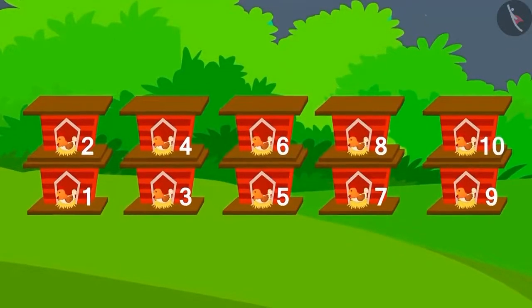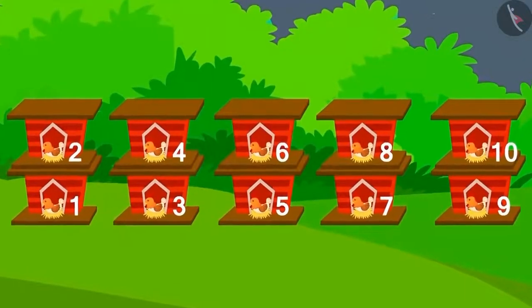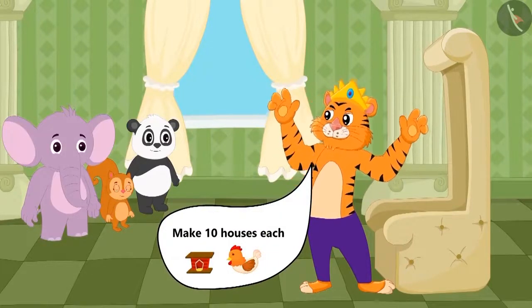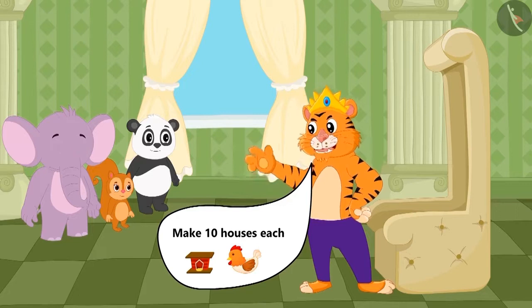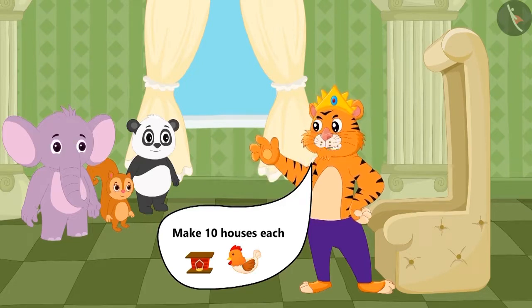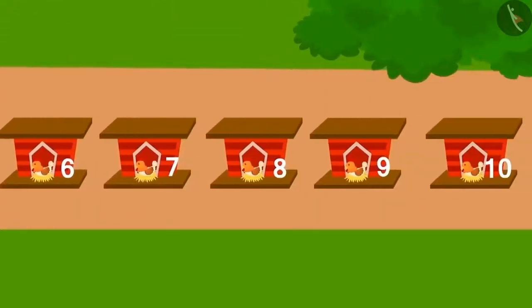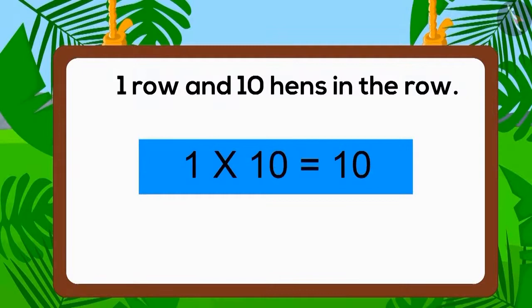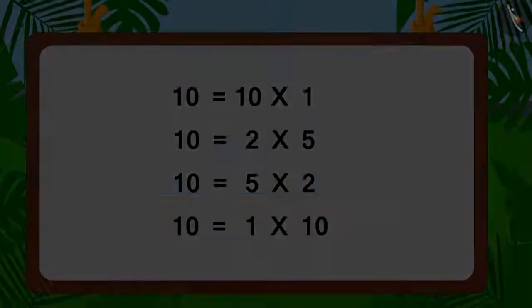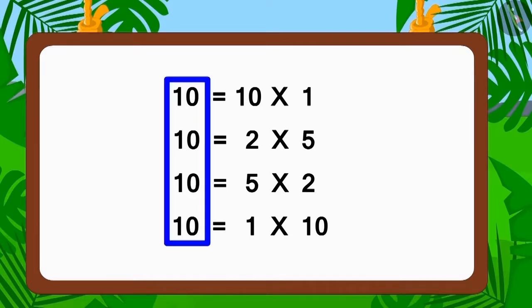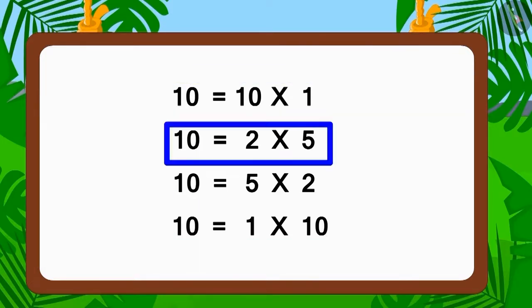Children, as per the conditions stated by the king, can you build the house for hens in any other way? Absolutely right — we can build the house by placing ten hens in one row as well. If you look closely, you will find that here we have written ten as four different forms of multiplication.